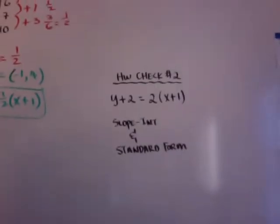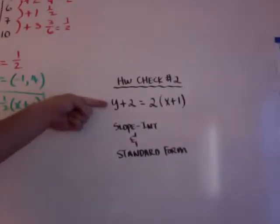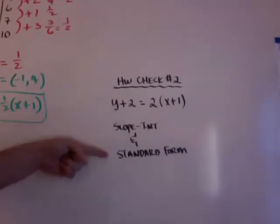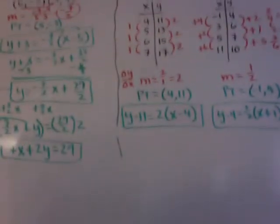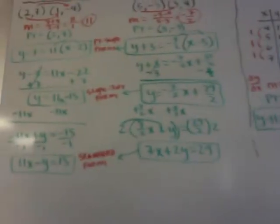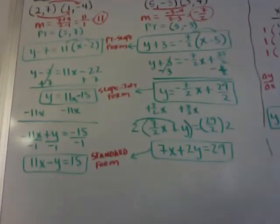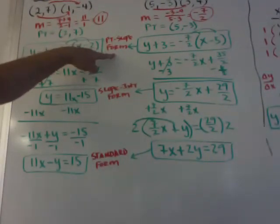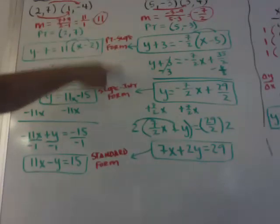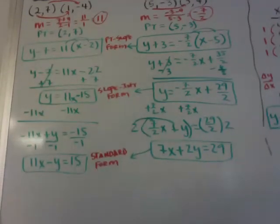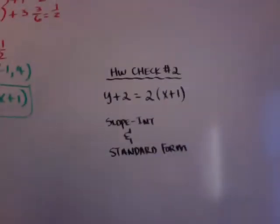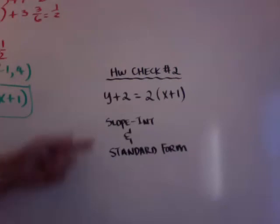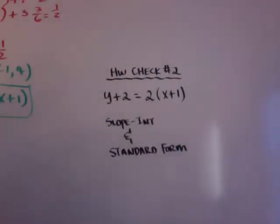Homework check number 2: I gave you an equation in point-slope form — y plus 2 equals 2 times the quantity x plus 1. Change it to slope-intercept form and standard form, just like we did in the examples. Take care.